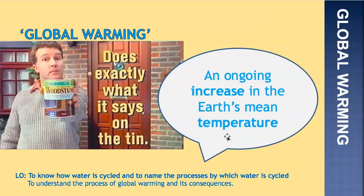Moving on — global warming. You are all too young to remember this advert, but there was a Ronseal advert for wood stain that said 'does exactly what it says on the tin.' Global warming actually does exactly what it says. The definition of global warming is an ongoing increase in the Earth's mean temperature. In an exam, please describe it as an increase in the Earth's mean temperature. Pause the screencast and make sure you've got that definition written down.